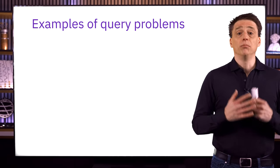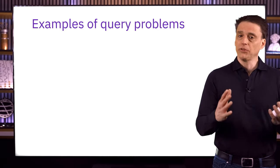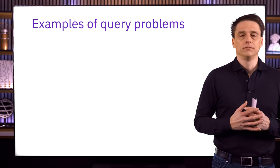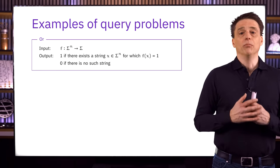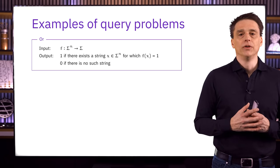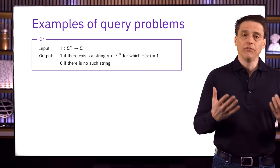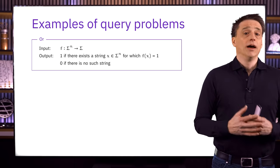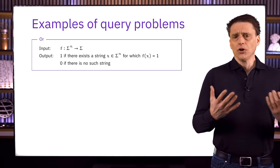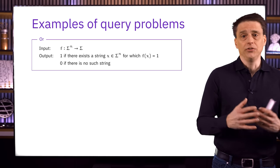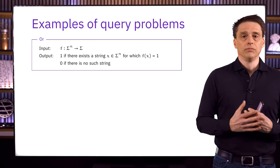Now let's look at a few examples of query problems. The first is the OR problem: the input is a function from n bits to one bit, and the required output is one if there exists some n-bit string x for which f(x) equals one, and zero otherwise if f(x) is always zero. If we think of the function f as providing random access to 2^n bits, one for each n-bit string x, then the problem is asking for the OR of those bits.